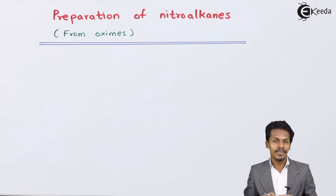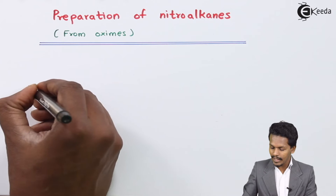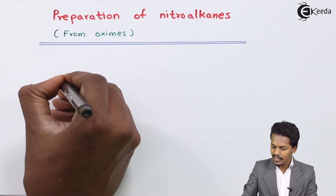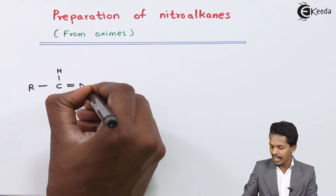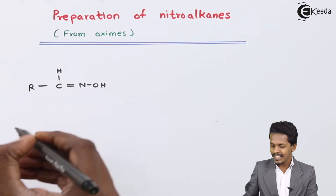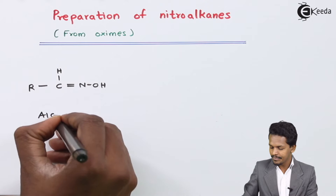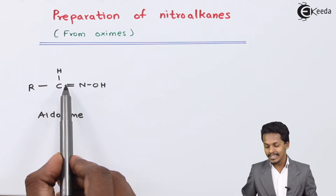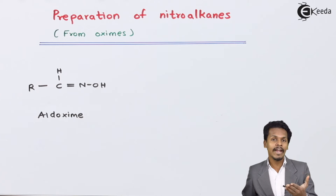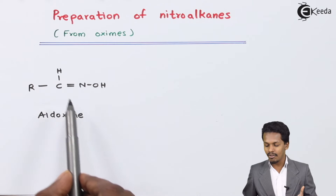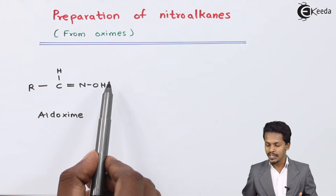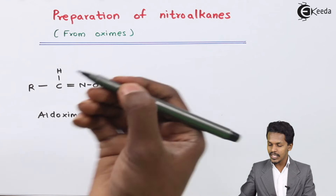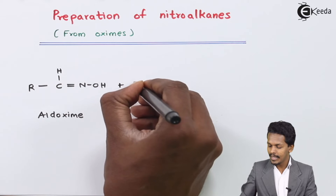Let me give you an example of aldoxime first. The general formula of aldoxime is R-CH=NOH. The reason is that R-CH with the double bond is very similar to that of an aldehyde, and that's the reason the name is aldoxime. Wherever N-OH is attached to C double bond, that is basically known as an aldoxime.